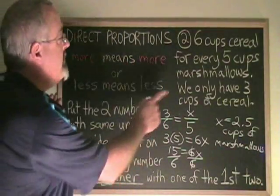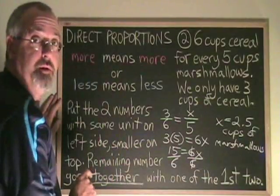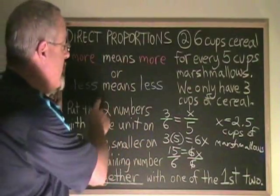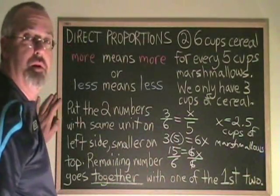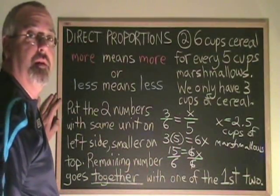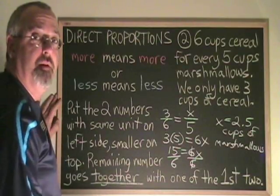First we have to recognize that we have a direct proportion. Then we use these rules to build our equation so that it will give us the right answer every time.